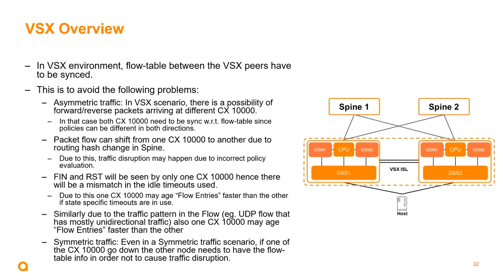Packet flows can shift from one CX to another due to routing hash changes in the spine, and the FIN and RST will be seen only by one CX 10,000 — creating a mismatch on idle timeouts. Similarly, a UDP flow with mostly unidirectional traffic may cause one CX to age out flow entries faster than the other. We need to ensure these CX switches are synced on flow tables to avoid traffic disruption.